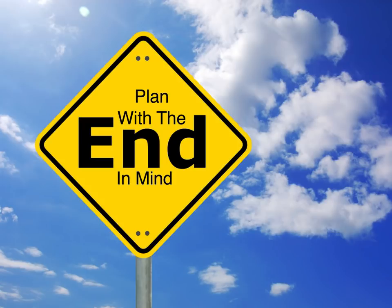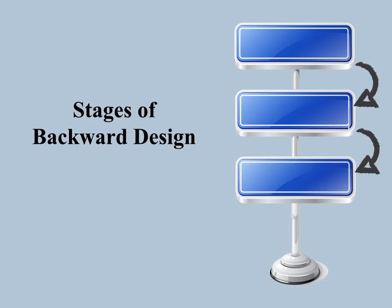In order for course or unit instruction to be engaging and effective, instructors should start with the end in mind. The backward design approach consists of three steps. The first step is to identify the desired results that you want from your learners — in other words, your destination for your students. This is where you think about what information you want your students to understand, which should not be confused with what you want them to know. Results that produce student understanding will in turn produce students that can transfer knowledge and skills into other situations.